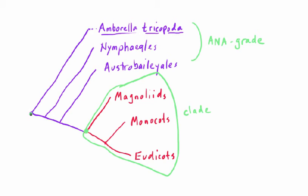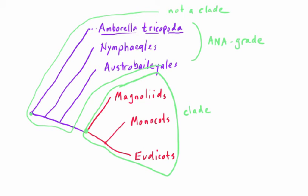If we define our grouping as consisting only of the ANA plants but not the mesangiosperms, this would not be a clade, because the most recent common ancestor to all these ANA plants is also a common ancestor to the mesangiosperms.